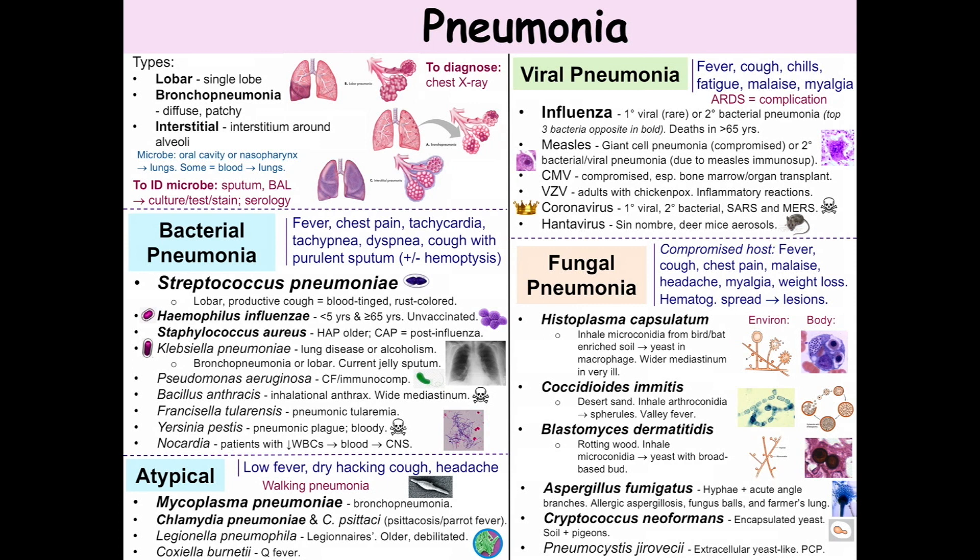Chlamydia psittaci causes psittacosis, also known as parrot fever. It can cause encephalitis, but that's much more rare than atypical walking pneumonia.